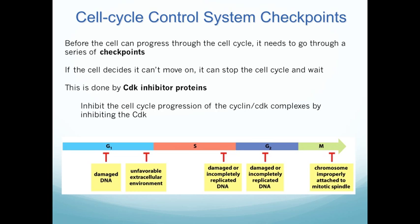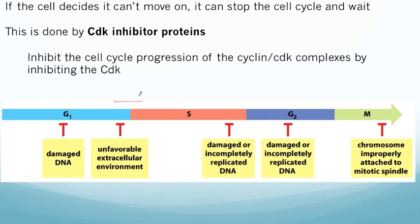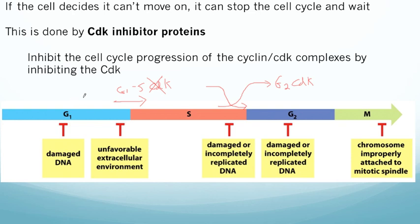To summarize phase transitions: if you want to move into S phase, you turn on the G1-S CDK complex, which starts replicating DNA. Then you rapidly degrade this complex, moving the cell out of S phase, and start making a G2 CDK to move into G2, and so on into mitosis. On top of all of those mechanisms, the cell has additional checkpoints where it checks for things happening within the cell.